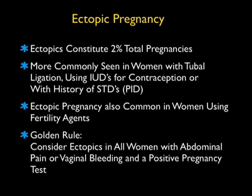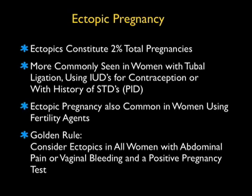Today's module is going to focus on ectopic pregnancy. Ectopic pregnancies constitute about 2% of all total pregnancies, although they're commonly seen in the emergency department. Ectopic pregnancy is more commonly seen in women with a history of tubal ligation, who are using intrauterine devices for contraception, or have a history of sexually transmitted diseases such as pelvic inflammatory disease with scarring of the tubes. Ectopic pregnancy is also commonly seen in women using fertility agents, which account for the increasing rate of ectopic pregnancy overall.